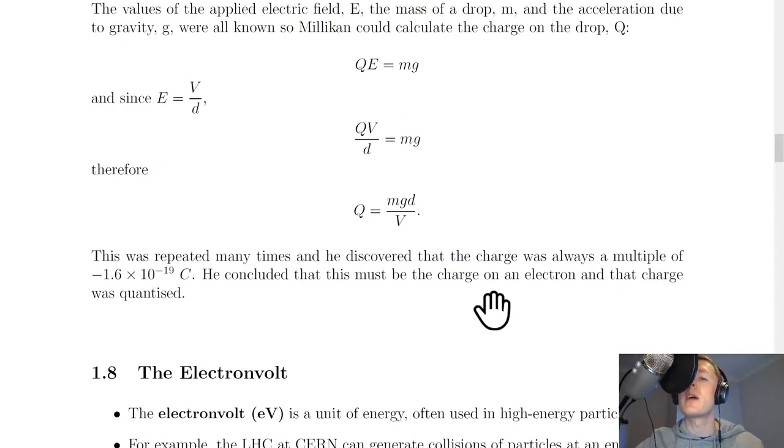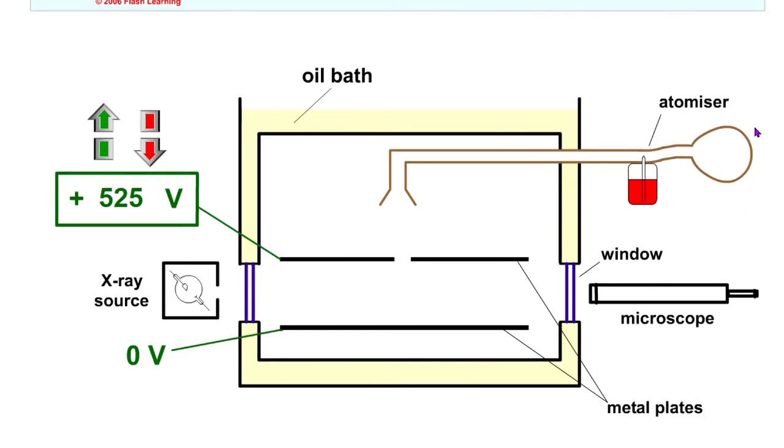Just to help you visualize this experiment a bit better, here's a quick simulation. You'll see we've got a chamber here with an atomizer which can spray in the oil droplets. We've then got a positively charged plate on the top at 525 volts and a charge at 0 volts on the bottom. We've also got an x-ray source which can be used to ionize the air inside the chamber. You can look through the microscope to try and balance the oil droplets with the forces.